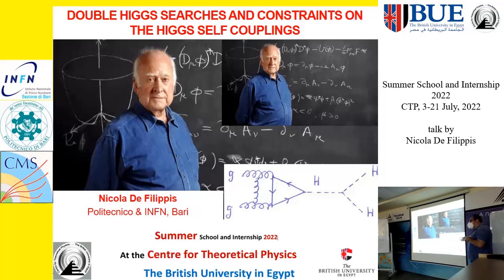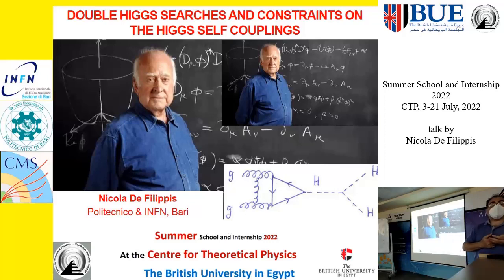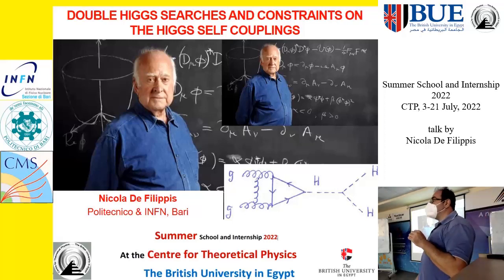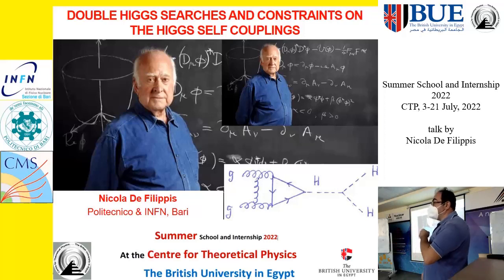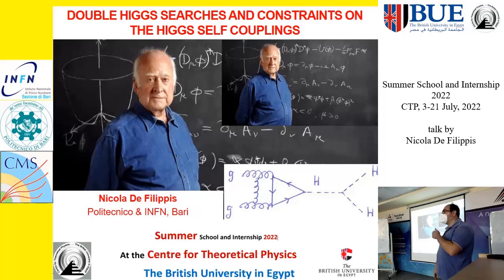This is the triple Higgs coupling, and then you have other diagrams with four Higgs particles. These couplings are fundamental to understand the shape of the Higgs potential. We could not be sure about the Higgs mechanism until we measure these couplings. The triple and quartic couplings are predicted by the standard model once you know the mass of the Higgs — and we know the mass — but then we have to measure them.